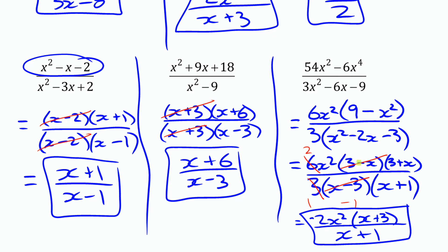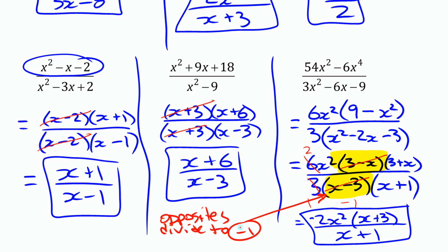Before we finish, note that opposite binomials divide to negative 1 — that's an important point to remember. That's a look at simplifying rational expressions, or reducing algebraic fractions.